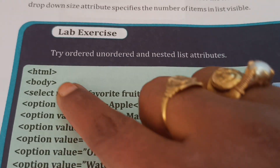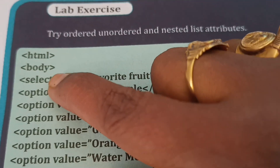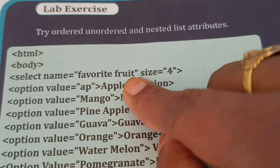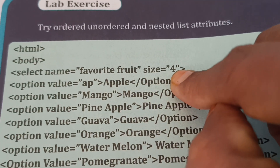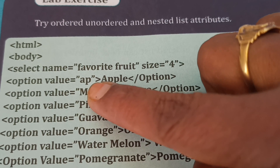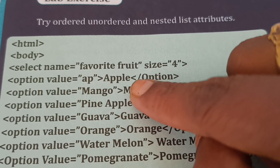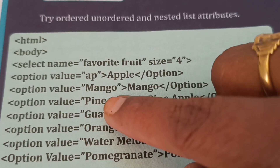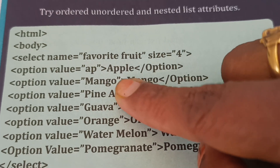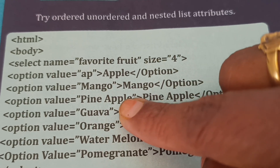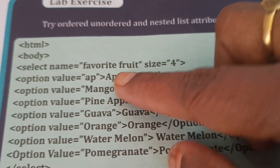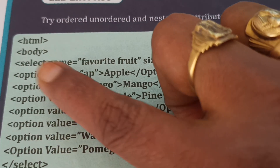Once, this is the program. HTML, body. Select the name: favorite fruit. Size is 4. Option value is apple. Second option is mango, pineapple, guava, orange, watermelon, pomegranate. These are all the option values.